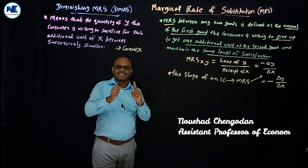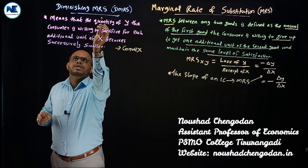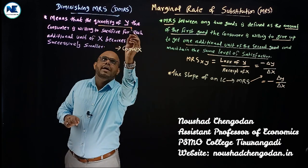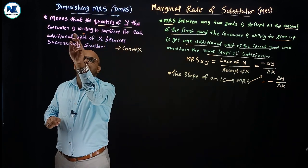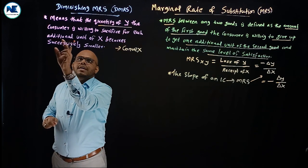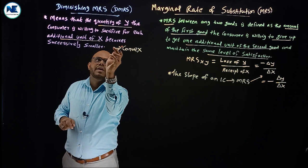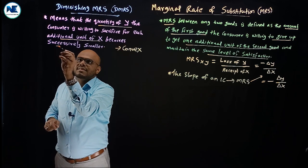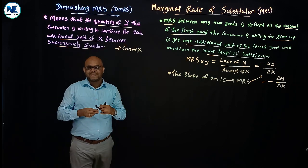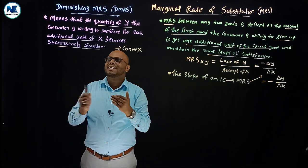Diminishing marginal rate of substitution means that the quantity of Y the consumer is willing to sacrifice or give up for each additional unit of X becomes successively smaller.